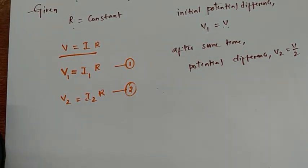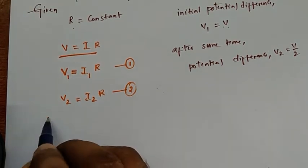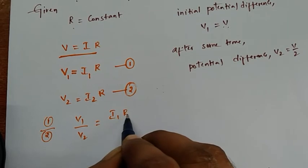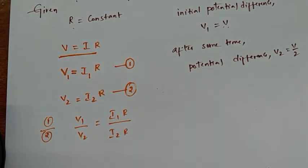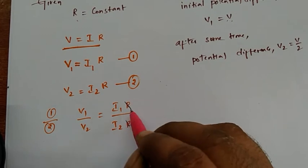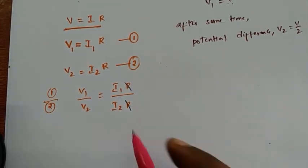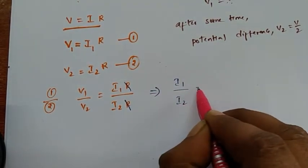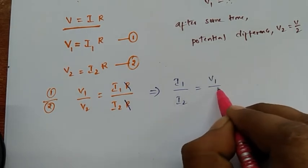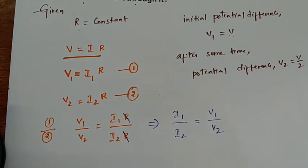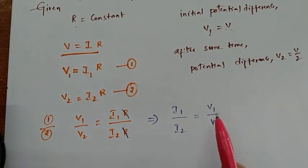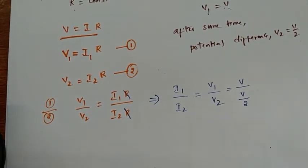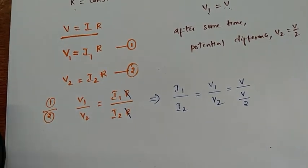Now we have two equations. We simply divide equation one by equation two: V1 by V2 equals I1·R divided by I2·R. R cancels on both sides, and we get the relationship: I1 divided by I2 equals V1 divided by V2. We already know V1 is V and V2 is V/2, so we write V divided by V/2.